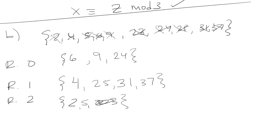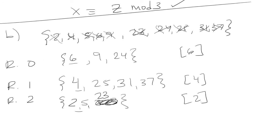Now we have our equivalence classes and we want to represent them with the least element. The class with remainder 0 contains {6, 9, 24}, represented by 6. The class with remainder 1 contains {4, 25, 31, 37}, represented by 4. And the class with remainder 2 contains {2, 5, 23}, represented by 2. That completes the problem.